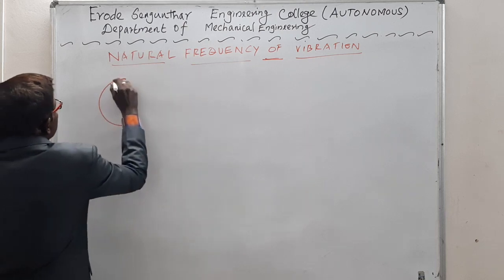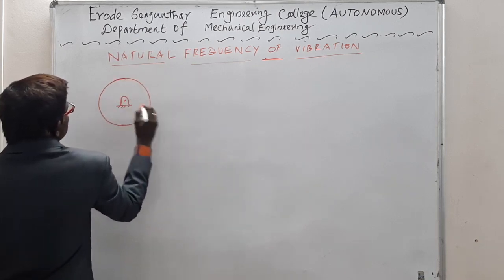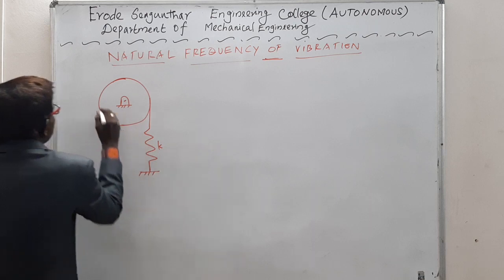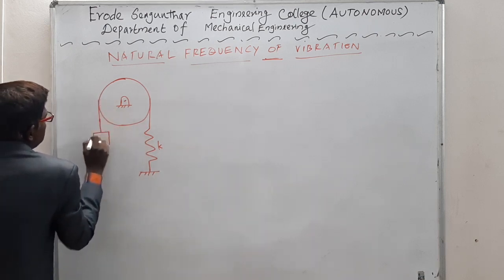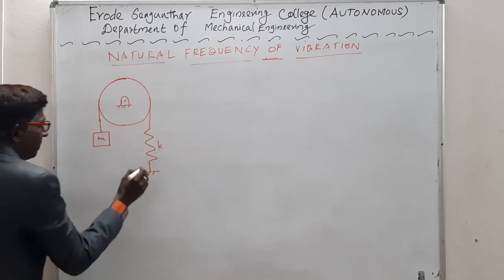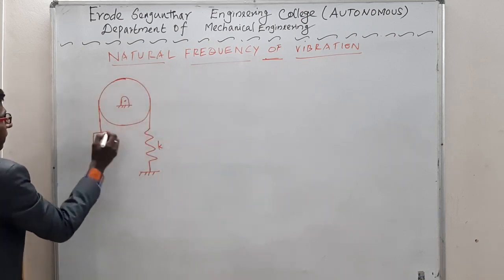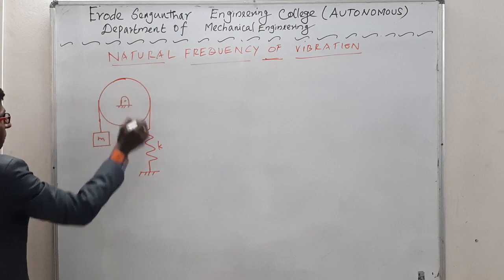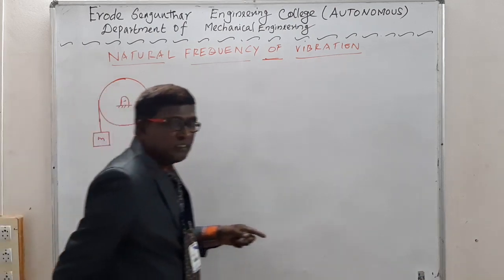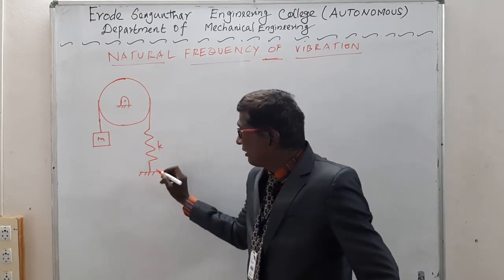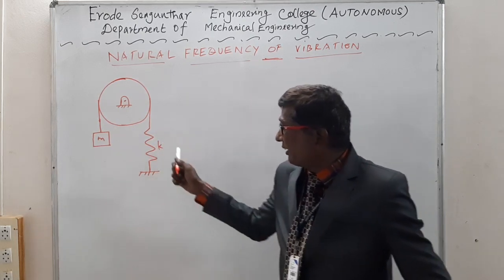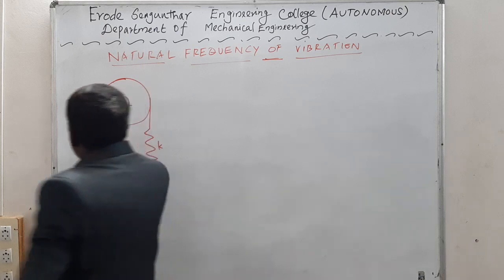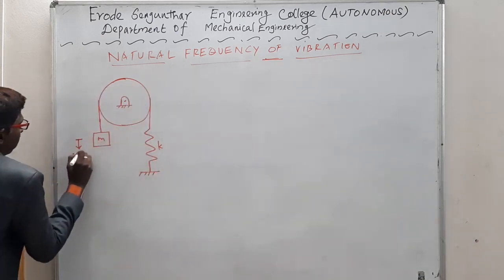Let us take a spring-mass-pulley system. What is shown here is a pulley over which we have a belt which is suspending a mass. A mass is being suspended with the help of a pulley and a belt system. The elasticity of the belt is considered by giving a spring-like construction with a stiffness value called K. The elastic property of the spring is included in this physical modeling, and the movement of the mass can be fixed with the help of a coordinate x(t).